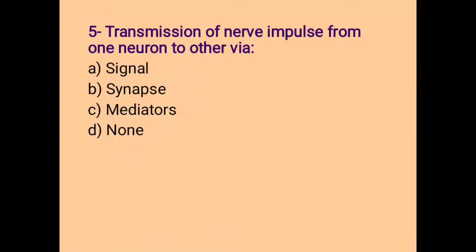Transmission of nerve impulse from one neuron to other via signal, synapse, mediators, none of these. And the correct option is Transmission of nerve impulse from one neuron to other via synapse.